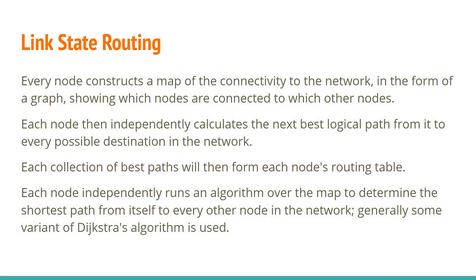This guides traffic along the shortest path possible. Each node that is part of this map can independently calculate the best logical path from where it is sitting to the destination. Once there is an exchange of link state information, this calculation becomes possible.